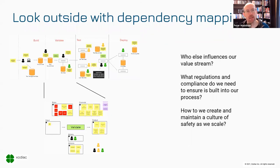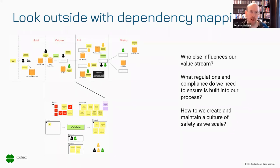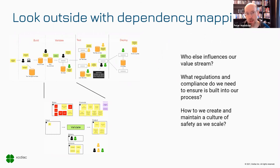When we look outside of the system, at dependency mapping, we look at what things are also impacting us. Are there regulations or compliance the system must abide by? Are there other things inside our organization that need to be satisfied? Are there technical dependencies we need to take care of? Understanding and mapping those stakeholders is critical to looking at the end-to-end system.